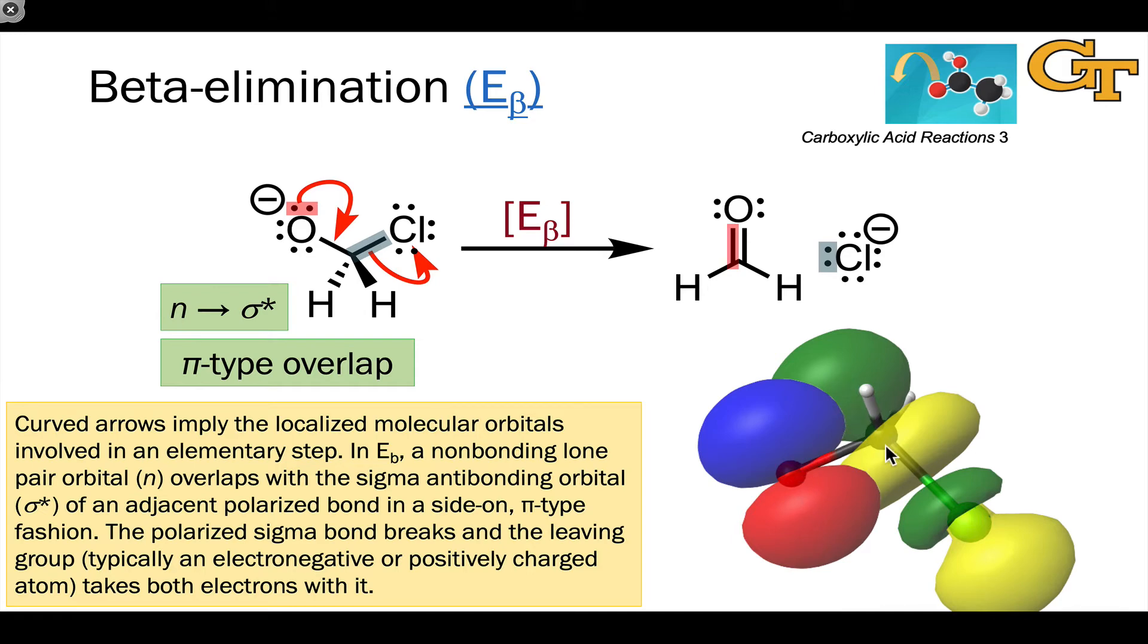And the overlap is quite good, as we can see by these regions of overlap between the two atoms. And we can see how this is beginning to form the pi-bond that exists in the product, the CO pi-bond in this case.